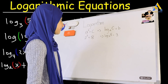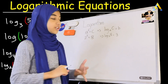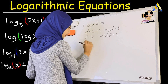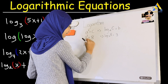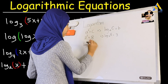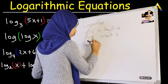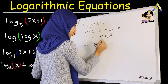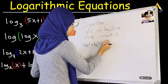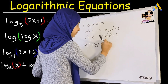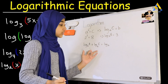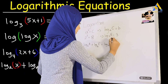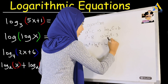Now let me show you another formula: log base B of a plus log base B of C equals log base B of (a times C). The base is the same on both sides, and the arguments multiply together inside.